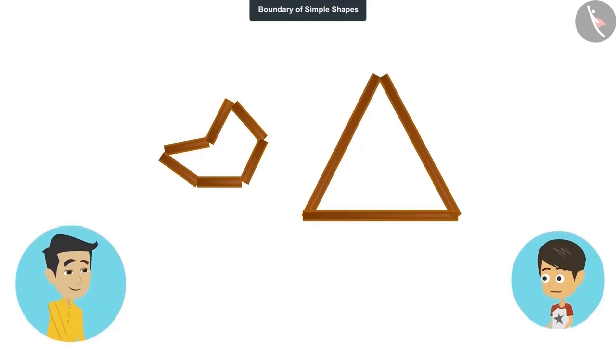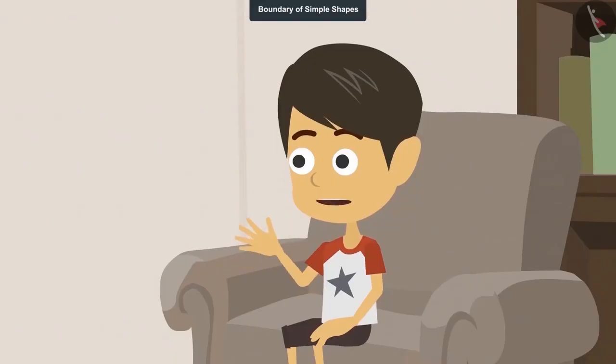The length of the boundary of this triangle shape is 15 centimeters, which is more than the length of the boundary of the shape with six edges. Absolutely right. That means the number of edges of a shape does not affect the length of its boundary. Yes, now I understand.